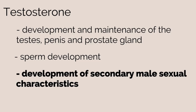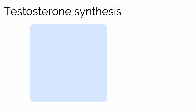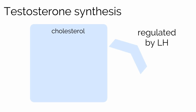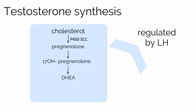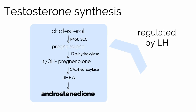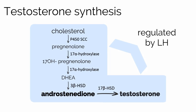How is testosterone synthesized? Testosterone is derived from cholesterol, and this process is regulated by LH. The process begins with the conversion of cholesterol to pregnenolone by P450 side-chain cleavage, followed by hydroxylation to DHEA by 17-alpha-hydroxylase, and lastly conversion to androstenedione by 3-beta-hydroxysteroid dehydrogenase. Androstenedione is then converted to testosterone by 17-beta-hydroxysteroid dehydrogenase.